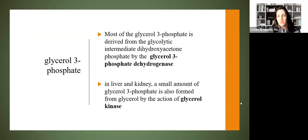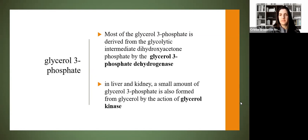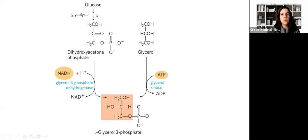Where does glycerol-3-phosphate come from? Most of it comes from the glycolytic intermediate dihydroxyacetone phosphate, by the action of the enzyme glycerol-3-phosphate dehydrogenase. There is a small amount that can be produced in the liver and kidney through the action of glycerol kinase. So glucose undergoes glycolysis producing dihydroxyacetone phosphate, which is then converted to glycerol-3-phosphate. Glycerol can also be acted upon by glycerol kinase leading to the production of glycerol-3-phosphate.